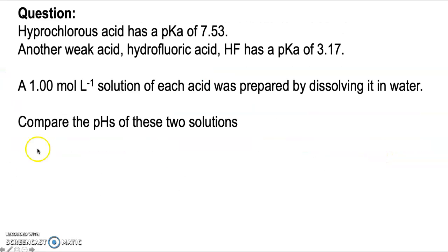Here's an exam question. Hypochlorous acid was given to you with a pKa of 7.53. Another weak acid, hydrofluoric acid, HF, has a pKa of 3.17. You're told that you've got a 1 molar per liter solution of each acid prepared by dissolving them in water and they want us to compare the two pHs of those solutions. Now remember, the solution that is more acidic, produces more hydroniums, will have a lower pH.